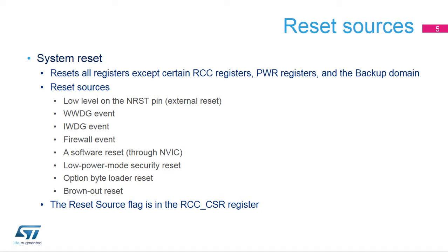The first type of reset is the system reset, which resets all the registers except certain registers for the reset and clock controller and power controller. It also does not reset the backup domain. The system reset sources are the external reset generated by a low level on an NRST pin, a window watchdog event, an independent watchdog event, a firewall event, a software event through the nested vectored interrupt controller, a low power mode security reset generated when stop, standby, or shutdown mode is entered but prohibited by the option byte configuration, an option byte loader reset, and a brownout reset.